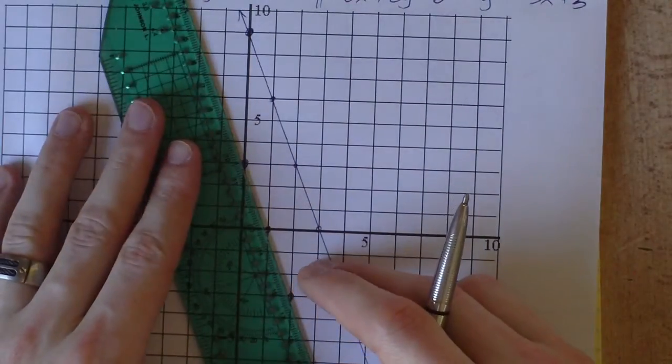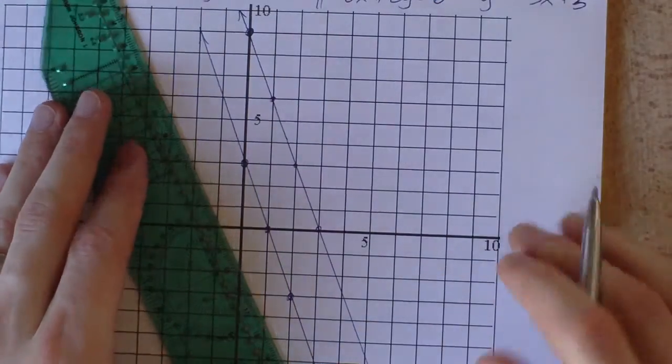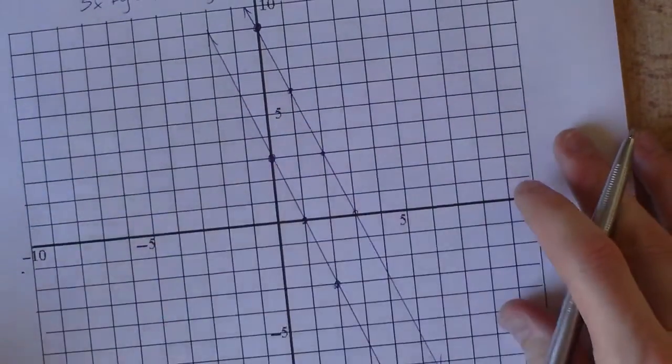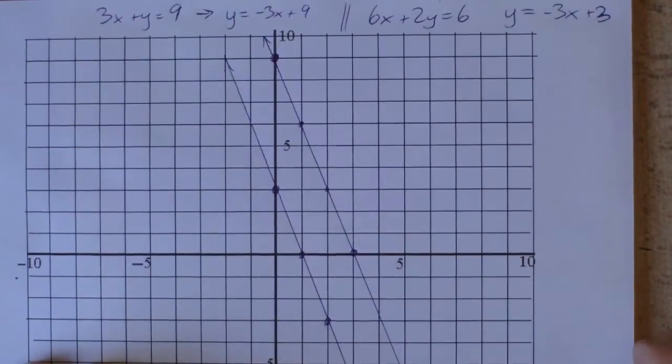What we can see is that when we graph these lines, representing it visually, these lines are parallel. They'll never intersect, so there is no solution. There can be no solution because the solution is the coordinates of the point where they intersect. If they don't intersect, no solution.